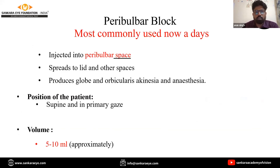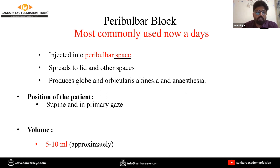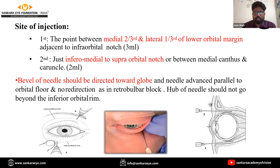Peribulbar anesthesia is the most commonly used technique nowadays, in which we inject the anesthetic agent into the peribulbar space where it spreads into the lid and other spaces. Approximately 5 to 10 ml of anesthetic is used. Unlike retrobulbar anesthesia, we do not redirect the needle or enter the muscle cone; we remain in the peribulbar space only.